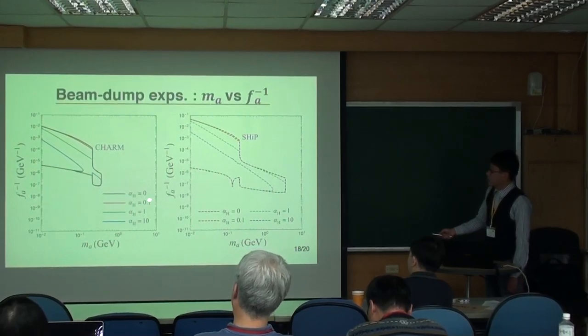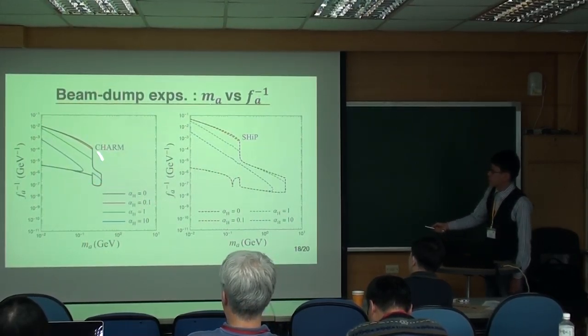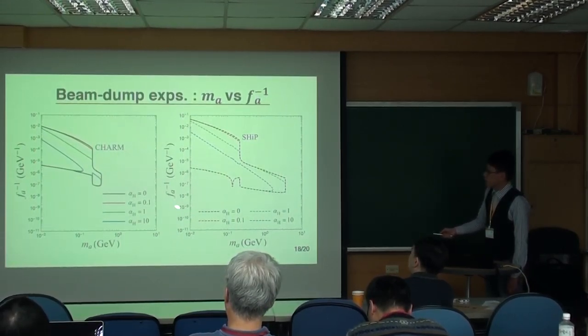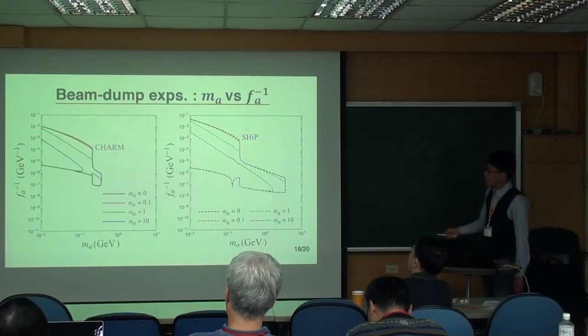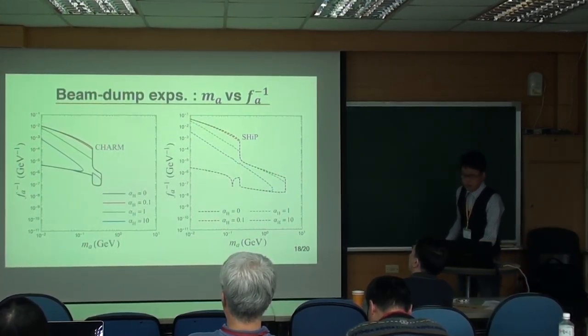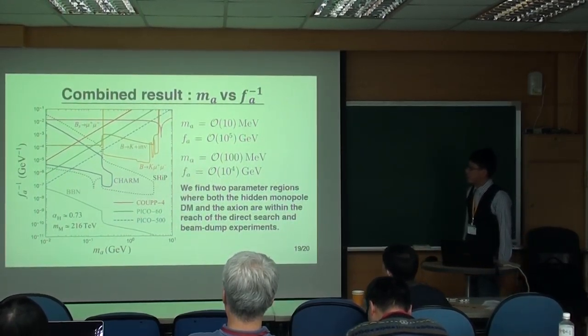So this is our numerical result. As you can see, for alpha_h equals zero, this is the case with no hidden photon. And once you turn on alpha_h, you see basically the parameter space shrinks like this.